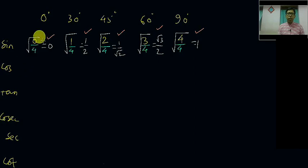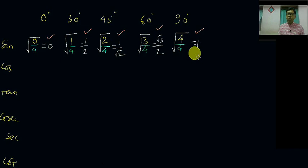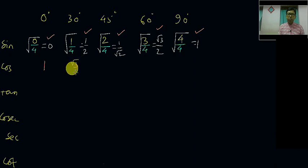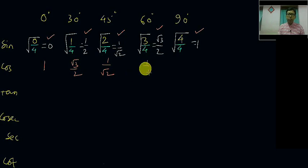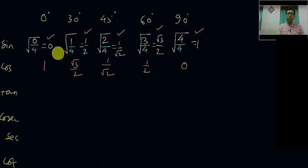Now to get the cosine function of the standard angles, it is very easy — just reverse the order. That means cos 0 degree is nothing but sin 90 degree, so it is 1. Cos 30 degree equals sin 60 degree, which is root 3 by 2. Cos 45 degree and sin 45 degree are both the same: 1 upon root 2. Cos 60 degree equals sin 30 degree, which is 1/2. And cos 90 degree equals sin 0 degree, so it is 0.